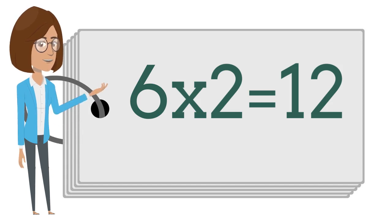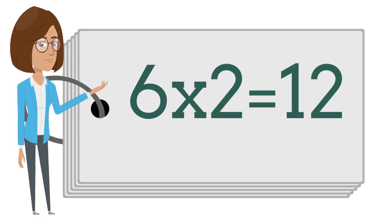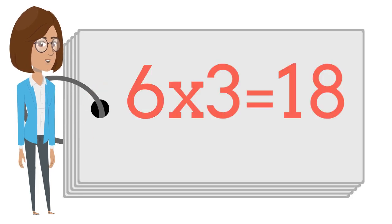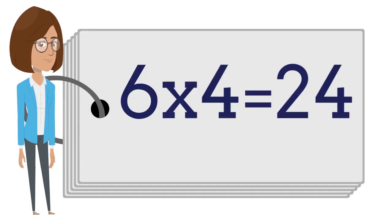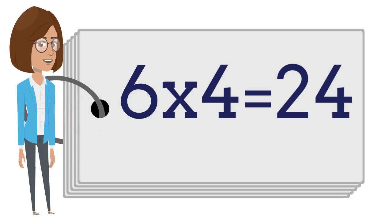Six times two is twelve. Six times three is eighteen. Six times four is twenty-four.